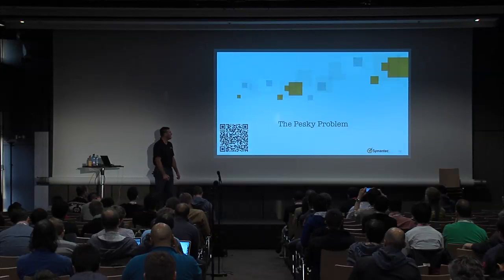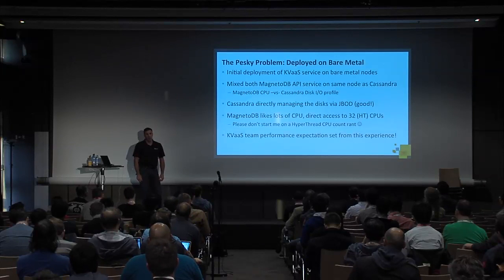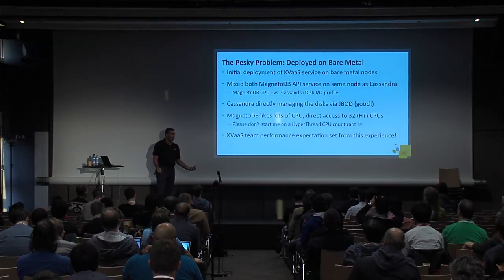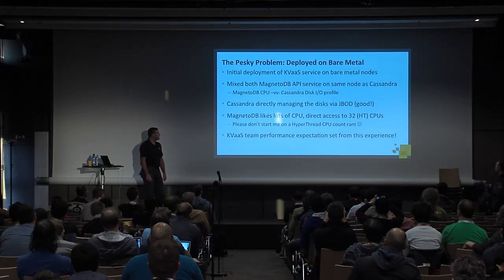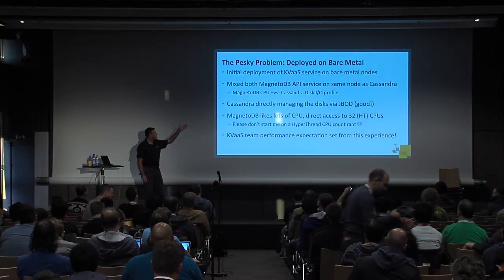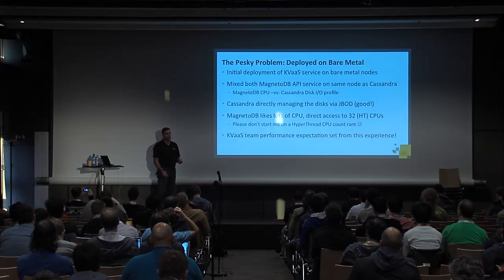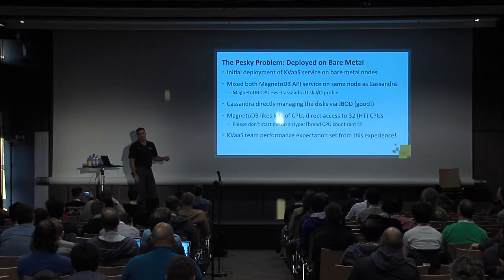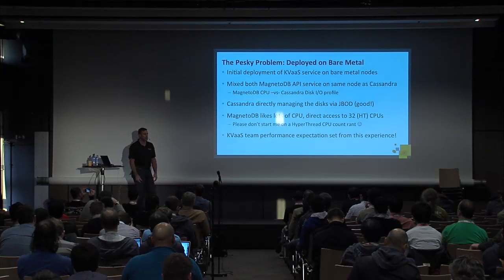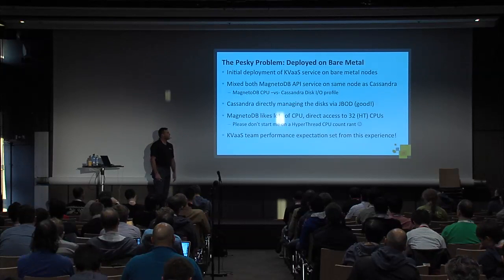So the pesky problem — why are we here? We initially deployed our key value service on bare metal, testing and learning how to operate it and writing code in conjunction with other open source community members fostering the MagnetoDB project. We started layering together the service, putting our MagnetoDB API services on the same physical nodes as the Cassandra data storage nodes. We found that MagnetoDB was very CPU intensive and the way we drove Cassandra was very disk I/O intensive, so they were very complementary services that didn't impact each other on the same node. Cassandra was directly managing the disk via JBOD, which it's very good at.